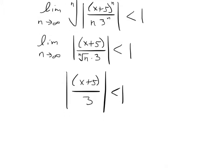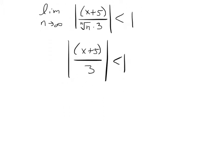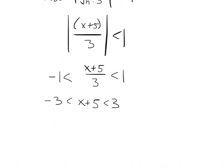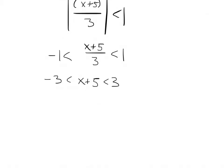Now just like we said in the previous video, once you get to this point, you say that means this central thing has to be sandwiched between negative 1 and positive 1. Next, if I multiply everything by 3, that gets me this. And then if I subtract 5, I'll end up with negative 8 is less than x is less than negative 2.